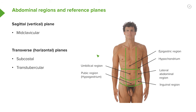Lateral to these, on either side, we have left and right versions. On the left-hand side we have the left hypochondriac, and on the right we have the right hypochondriac. Inferior to those and lateral to the umbilical region, we have the left lumbar and the right lumbar regions. And then inferior to that again, we have the left inguinal region and the right inguinal region.